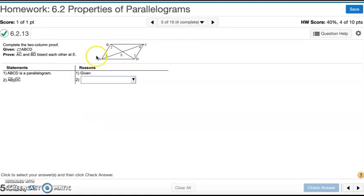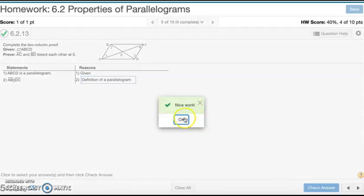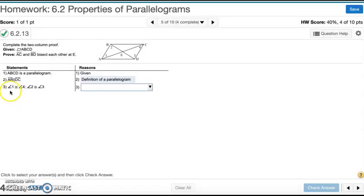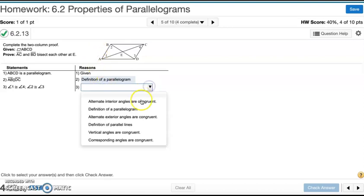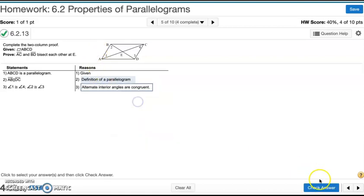Statement 2 says AB and CD are parallel to each other. And the reason for that is because if it's a parallelogram, opposite sides are parallel to each other. Now for statement 3, we're told angles 1 and 4 are congruent and angles 2 and 3 are congruent. They're alternating interior angles and those are congruent if these sides here are parallel, which they are. So we're going to say alternate interior angles are congruent.